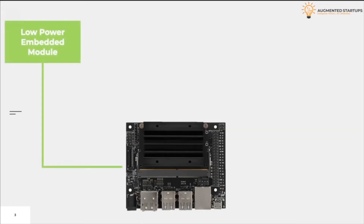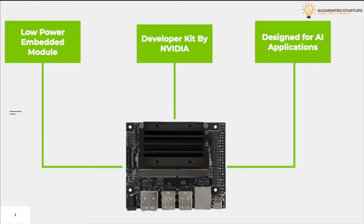Jetson is a small and low-powered computer that is designed by NVIDIA specially for the purpose of AI applications. Although it is a low-power module, it is still powerful enough to run different machine learning models that include image classification, object detection, segmentation, etc. We'll be discussing some of them in detail in the later lectures.